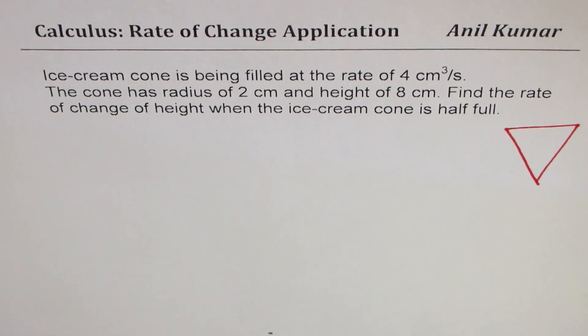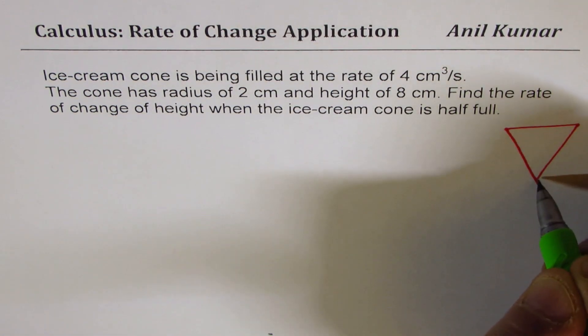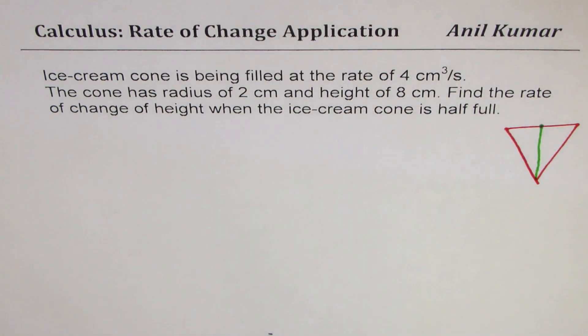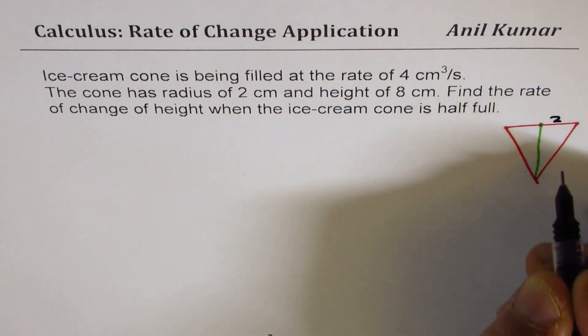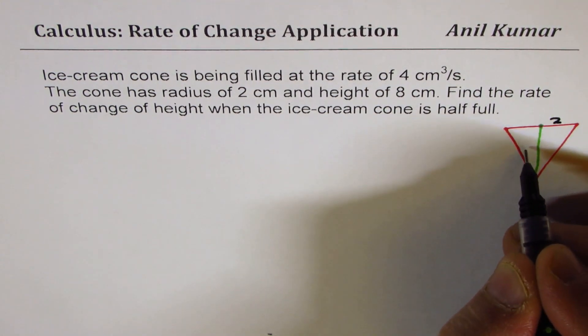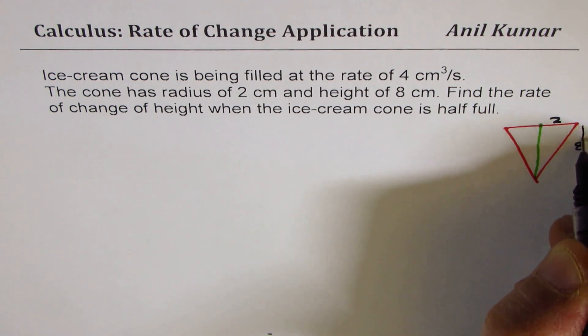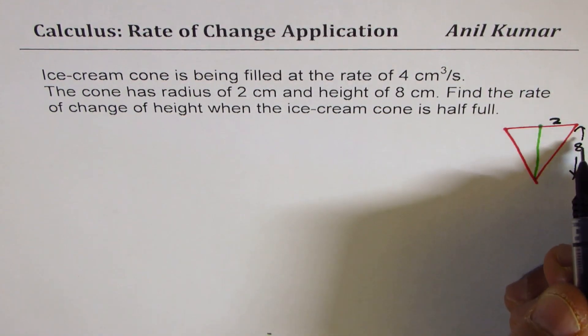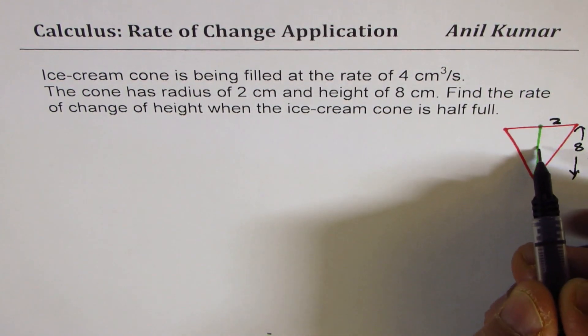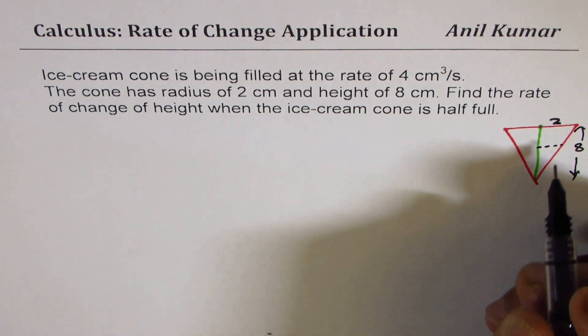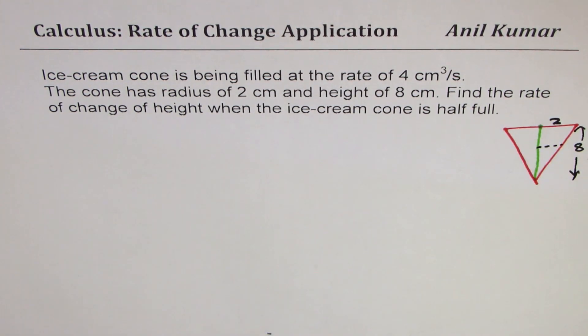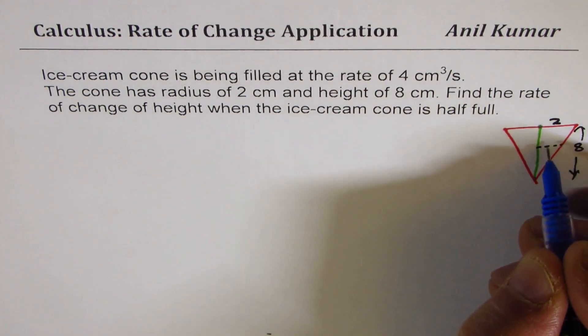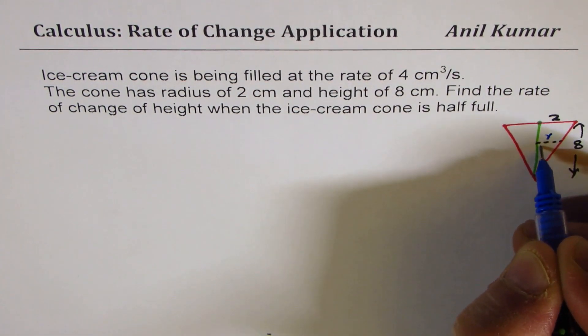You need to figure that out also. Let's say this is the ice cream cone for us, height of 8 cm and radius of 2 cm. So we'll say radius of 2 cm and this height is 8 cm, right? So from here to here. Now to find relation between r and height, we can take any particular instance. So at that instance, let r be the radius and h be the height.